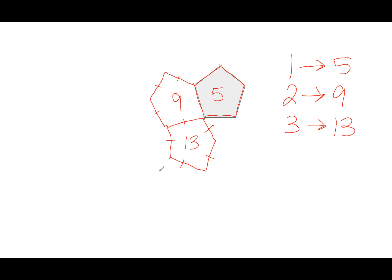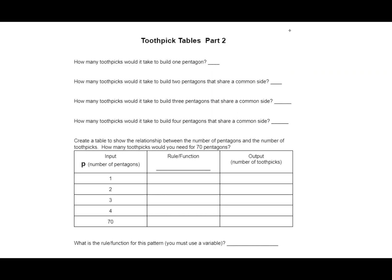And let's just keep the chain going here. I'm going to add a fourth pentagon up here. So 13, 14, 15, 16, 17 toothpicks, we would need to make four pentagons where they're just sharing one side. So this is kind of the pattern, the input-output information that we are going to need for our next slide. We're going to take a look at the table that goes along with this.